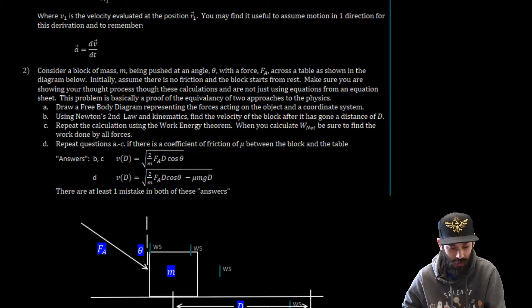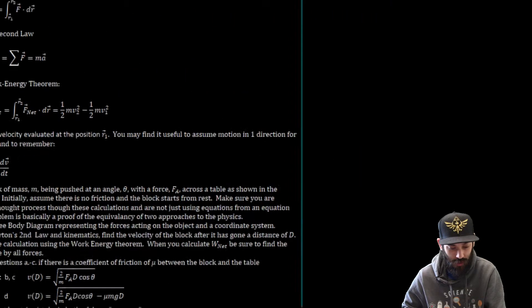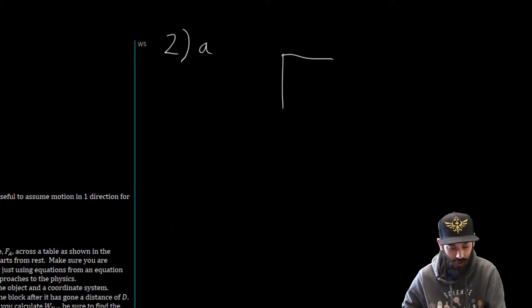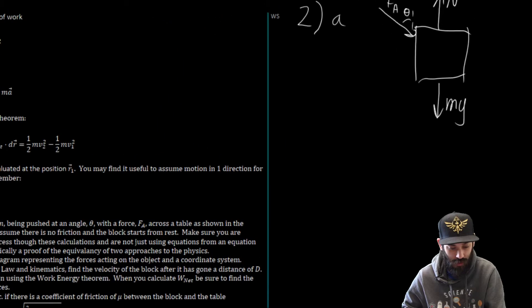Make sure you're showing your thought process through these calculations and are not just using equations from the equation sheet. This problem is basically a proof of the equivalency between two approaches to the physics. So the first thing we want to do is draw the free-body diagram. We have our normal force, the force of gravity, our applied force F_A at this angle of theta. Initially we're assuming there's no force of friction, so that's all that we have.